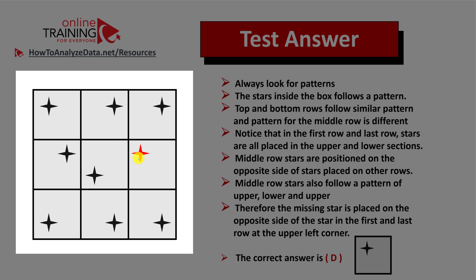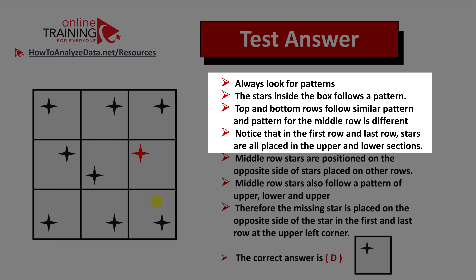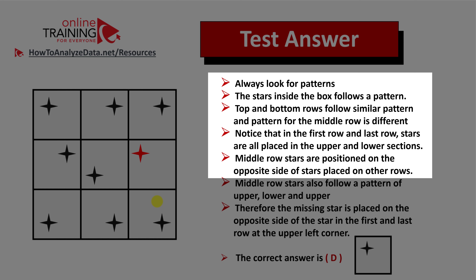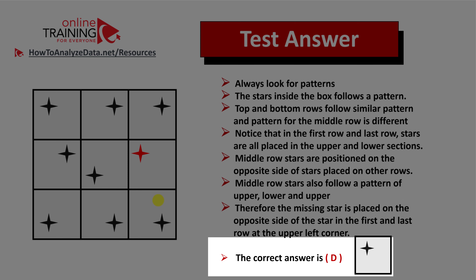The same pattern applies in the right column as well, which is why the missing star is placed on the opposite side of the stars in the top and bottom rows. To recap: the top and bottom rows follow similar patterns, while the middle row is very different. The first and last row stars are in the upper and left sections, while middle row stars are positioned on the opposite side and follow an upper-lower-upper pattern.